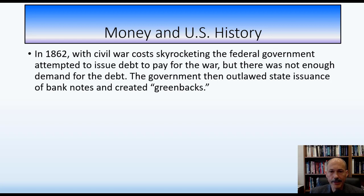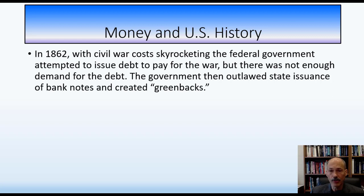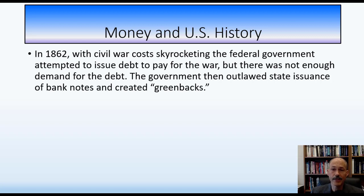In 1862, Civil War costs skyrocketed. The federal government attempted to issue debt to pay for the war, but there wasn't enough demand, and taxing was difficult. So the government outlawed state issuance of bank notes and created greenbacks — named because the reverse side of the dollars was green. In 1862, this country finally got a uniform central currency, a huge step forward.